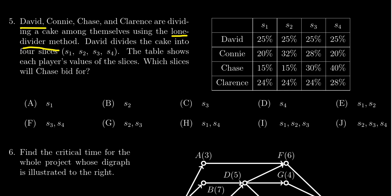David divides the cake into four shares: S1, S2, S3, and S4. To him, all are fair shares, so they're each worth 25%. The values for everyone are shown on the screen.